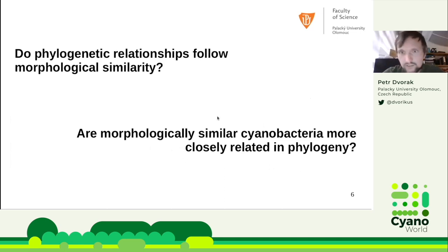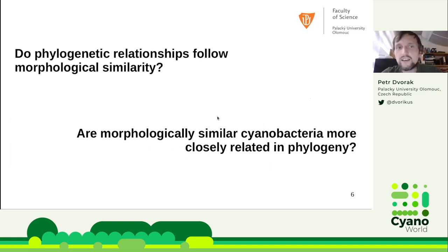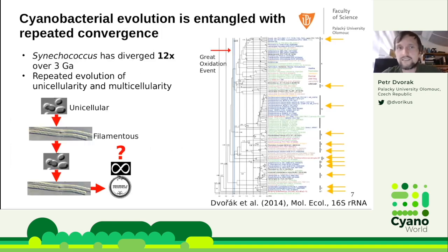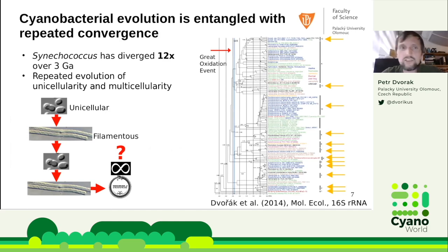Now there are two questions. Do phylogenetic relationships follow morphological similarity? In other words, morphologically similar cyanobacteria should be more closely related, right? But that doesn't actually work. We observe a lot of convergent evolutionary events in the evolution of cyanobacteria.